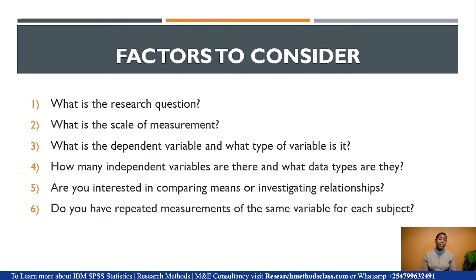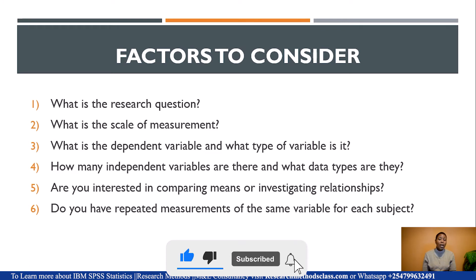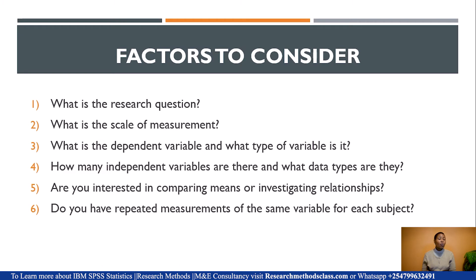The second factor is the scale of measurement — at what level have you measured your variable? Is it at the nominal, ordinal, interval, or ratio level? We have statistical tools appropriate for categorical data — that is, data measured at nominal and ordinal — and tools appropriate for continuous or scale data measured at interval or ratio. For instance, chi-square is used to determine the relationship between categorical variables, whereas Pearson is used to determine the relationship between continuous variables, especially the dependent variable. Always ask yourself: what is the scale of measurement?